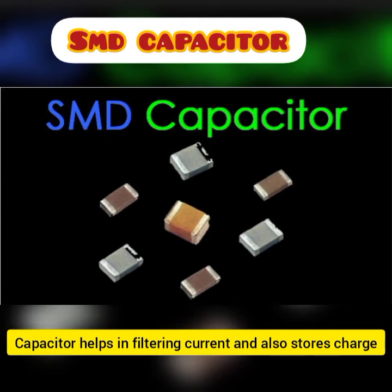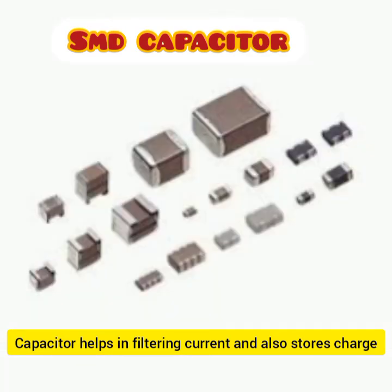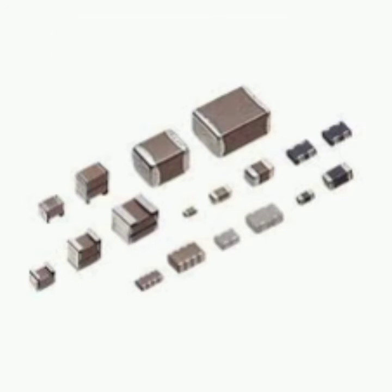The next component is the capacitor. The work of the capacitor is to filter current, remove ripples, and store charges. It comes in different forms: network capacitor, mica capacitor, and ceramic capacitor. Some capacitors are polarized (having positive and negative sides) and some are non-polarized. The network capacitor is used for filtering, frequency tuning, and impedance matching. Capacitors come in different colors — some are yellow, some are black.